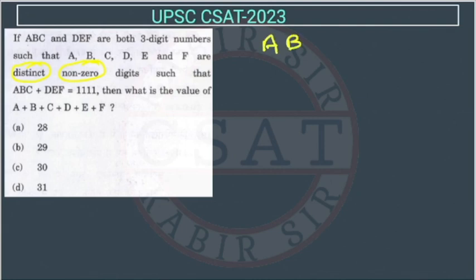So this is ABC and this is DEF, which equals 1111. Then what is the value of A+B+C+D+E+F? We have to find the value of this whole summation.